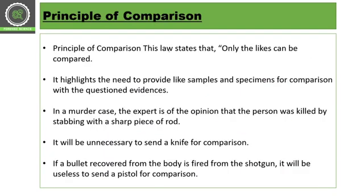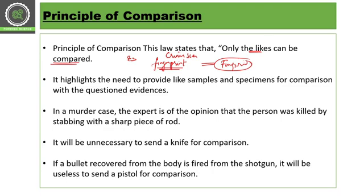The next principle is the principle of comparison. It says only likes can be compared. For example, if you have a fingerprint from the crime scene, you can only compare it with another fingerprint. You cannot compare a fingerprint pattern from the crime scene with a shoe print. You can compare fingerprint with fingerprint, shoe print with shoe print, or a chemical with another suspected chemical. You cannot compare a chemical with a fingerprint or a shoe print with a bullet. This highlights the need to provide like samples and specimens for comparison with questioned evidence.